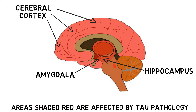The spread of the tau pathology is correlated with other degenerative signs, such as general atrophy of the brain, severe neuronal loss in areas such as the hippocampus and amygdala, and less substantial neuronal loss in a number of other brain regions.